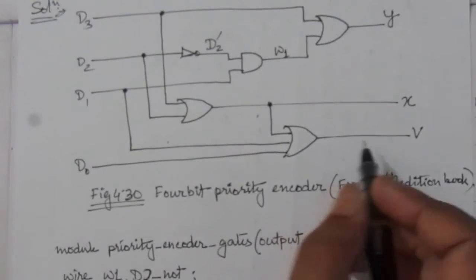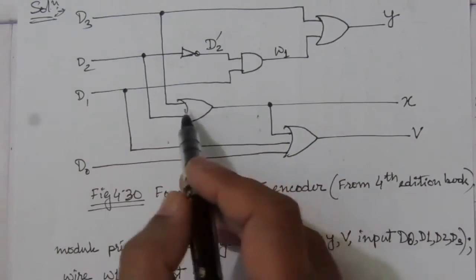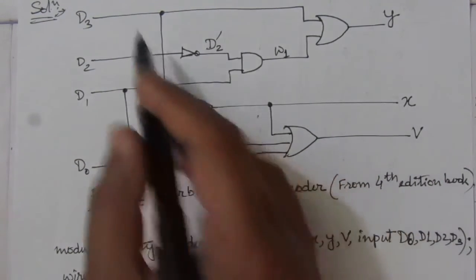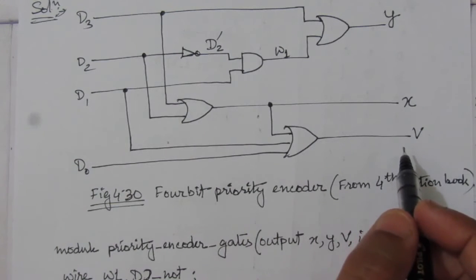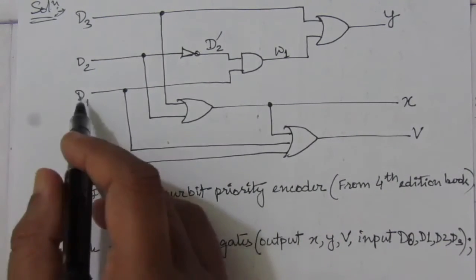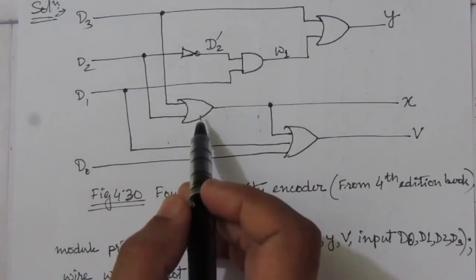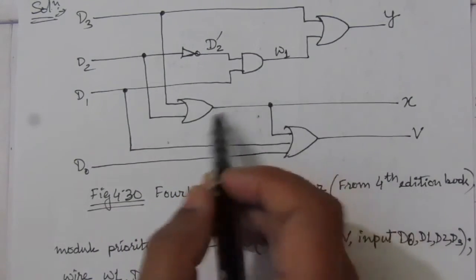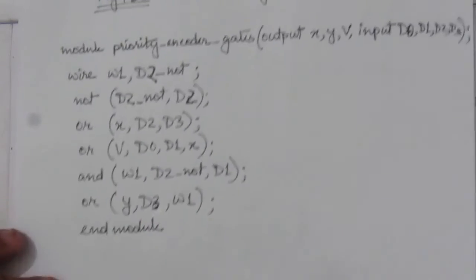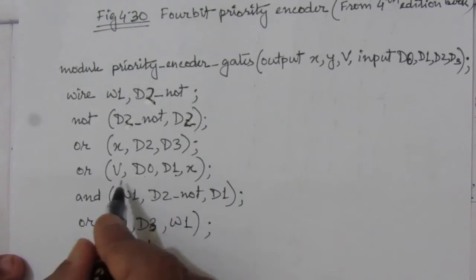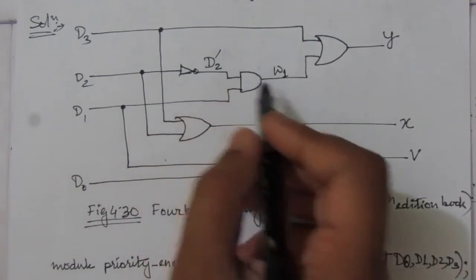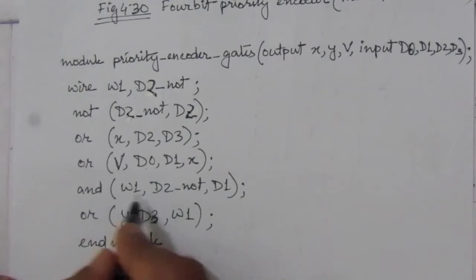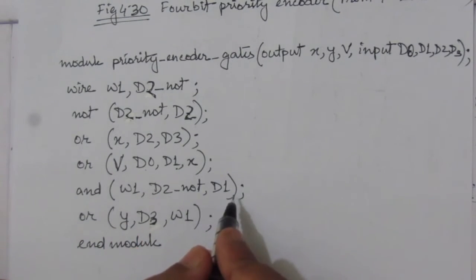For v, we have d2 + d3 + d1 + d0, so v is the summation of d0, d1, d2, and d3. Since d2 and d3 are already combined into x, we write: or v, d0, d1, x — storing the OR result in capital v. Then for the AND operation, w1 is the AND of d2_not and d1, so we write: and w1, d2_not, d1.